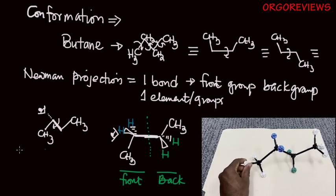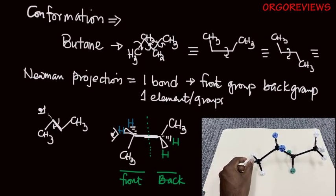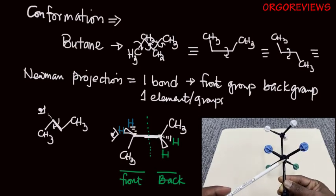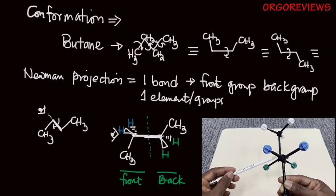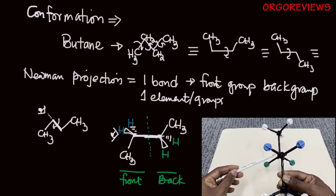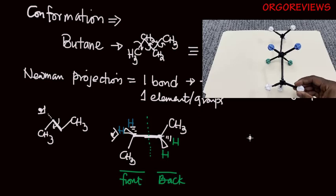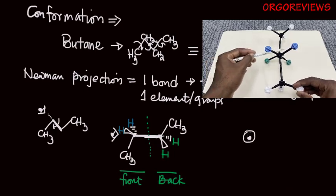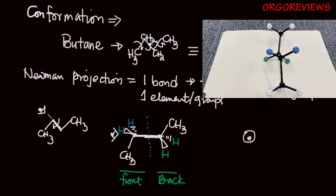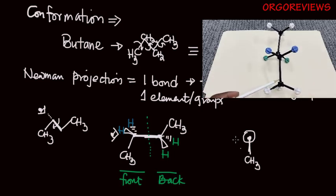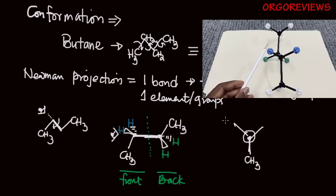Looking at the front group — if you look down this carbon, you will not be able to see the back carbon, as you can see in the model kit. In order to represent this as a Newman projection, you use a point of contact for the front carbon, and the back carbon is made as a larger circle. A methyl group is pointing down, the blue hydrogens are pointing up, and these two hydrogens will be pointing up.